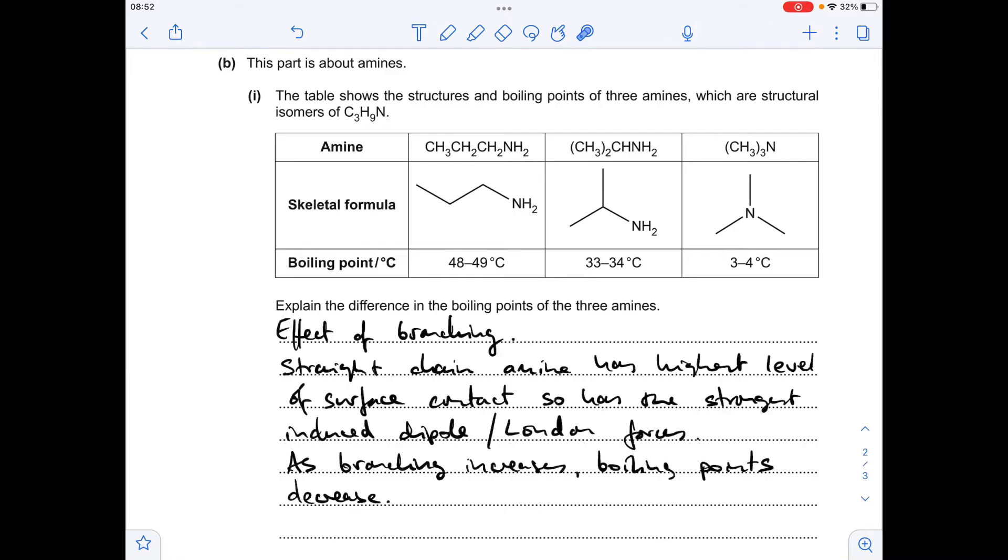The straight chain amine has the highest level of surface contact, so it's going to have the strongest induced dipole or London forces between its molecules. As the branching increases, you can see that the boiling points decrease. Obviously the amount of surface contact decreases and the induced dipole forces or London forces are getting weaker.